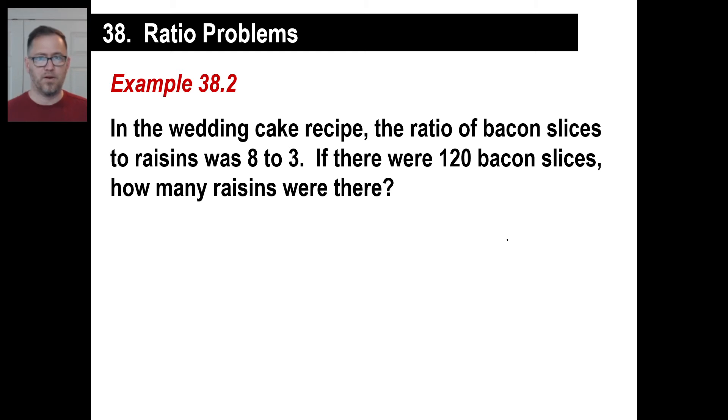Let's do another one. This is a practical one. In the wedding cake recipe, the ratio of bacon slices to raisins was 8 to 3. If there were 120 bacon slices, how many raisins were there? That's going to be a happy bride. Bacon and raisins. So we could say the ratio of bacon slices to raisins, B to R, is 8 to 3.